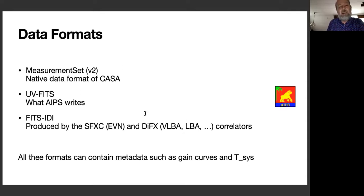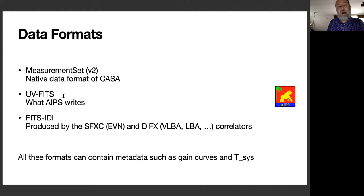When importing in CASA, there are differences in what survives. With a measurement set, nothing is lost. With UVFITS for non-VLA data, you probably lose a lot of the metadata needed for calibration — so it's fine to do basic calibration in AIPS and export, but it's not a good starting point for complete calibration in CASA. FITSIDI is the standard for VLBA data and can be fully imported into CASA for complete calibration there.